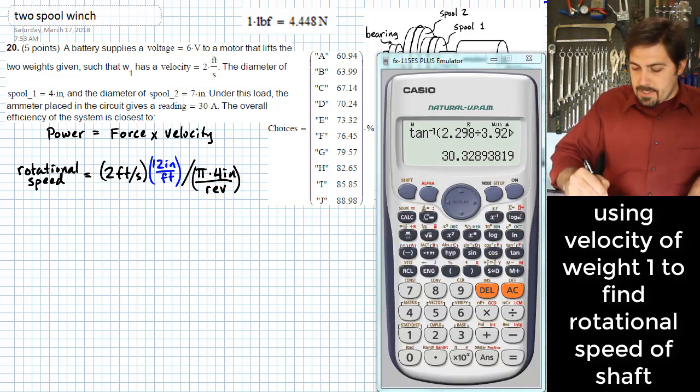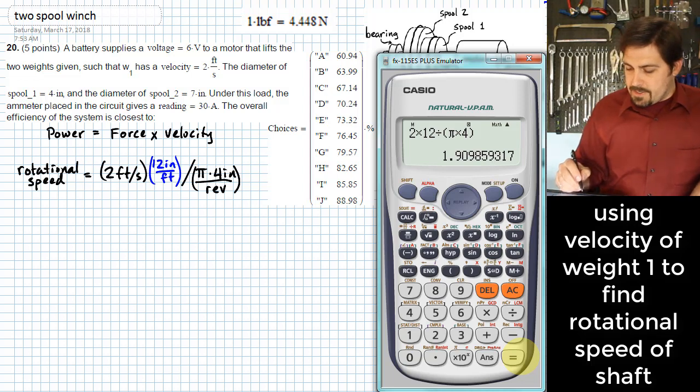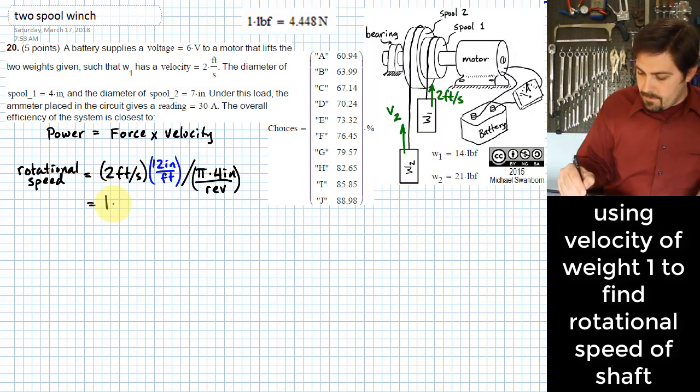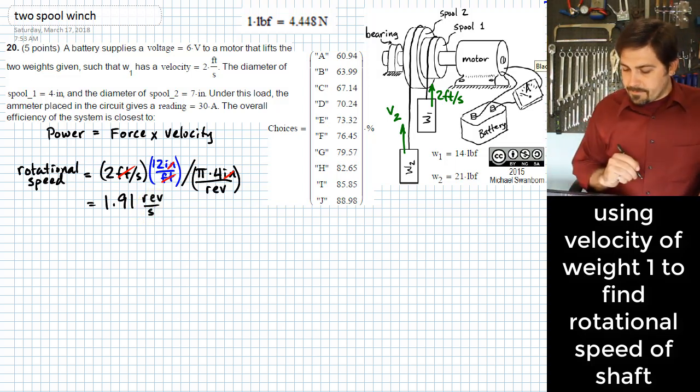That's how far it goes per revolution. If I punch these into a calculator, I end up with 2 times 12 divided by the quantity of pi times 4, and what we find is this ends up giving me 1.91 or so. I'm going to actually store that into A. What are the units on that? Well, the feet cancel out, the inches cancel out, and it's revolutions per second.